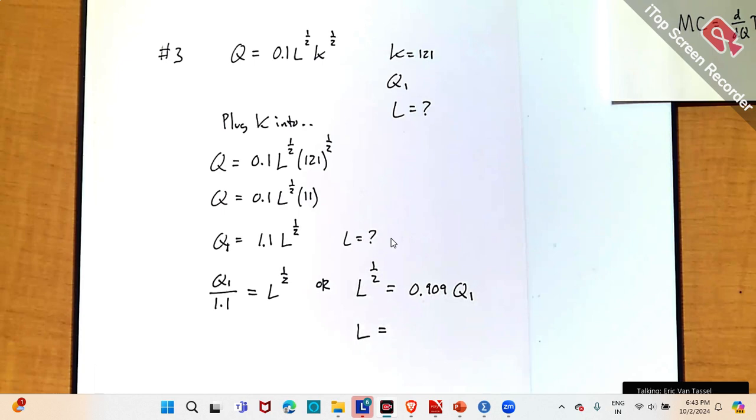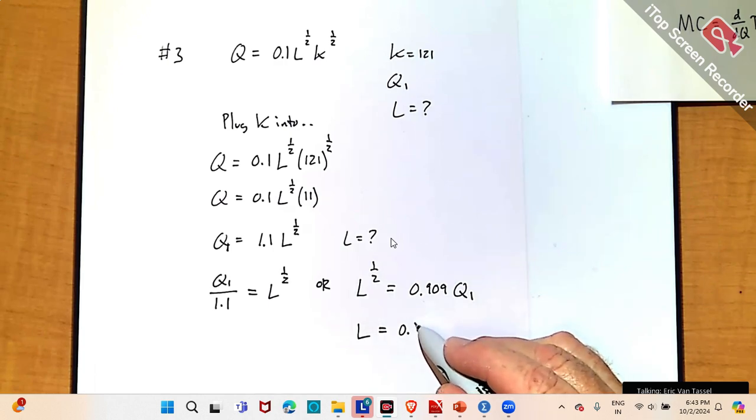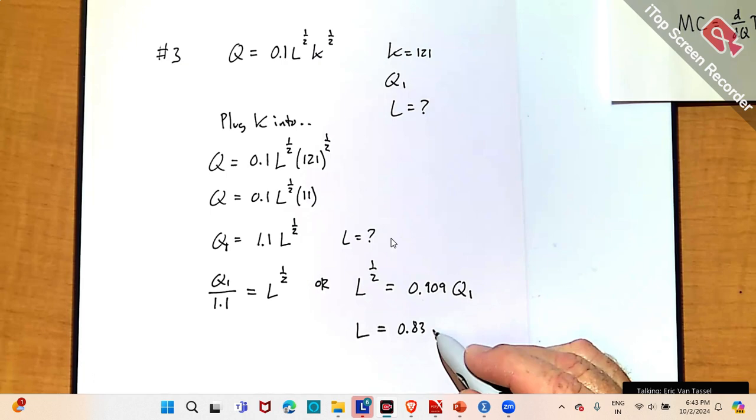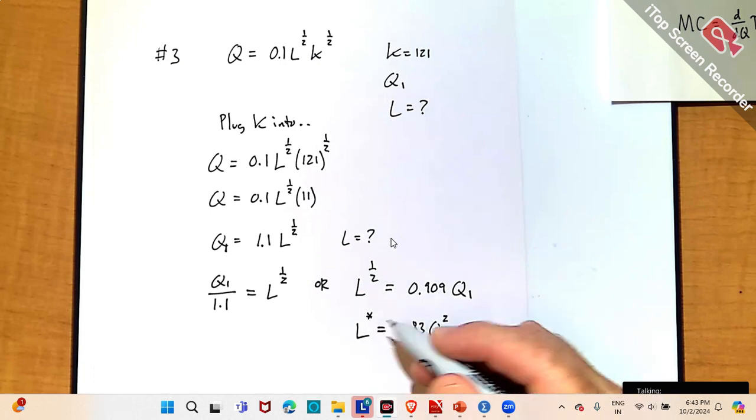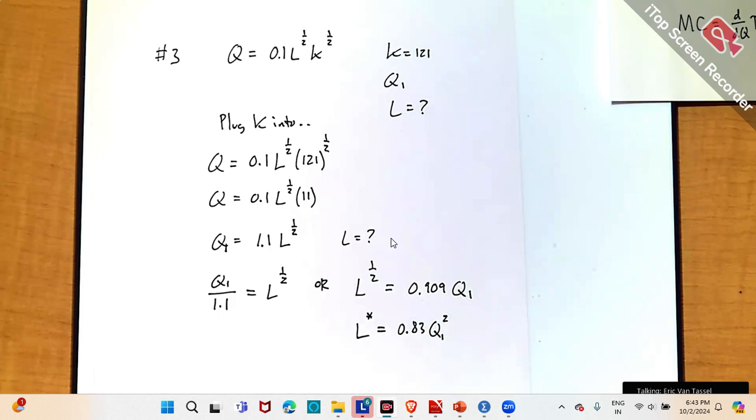And then, to isolate L by itself there, L to the power of 1, I can just square both sides. So, I think that becomes 0... There's some rounding. 8, 3, something like that. Q1 squared, I think. So, you square Q and you square 0.909. So, that would be my conditional factor demand for labor.